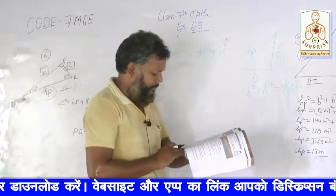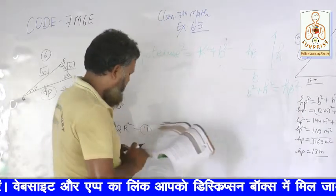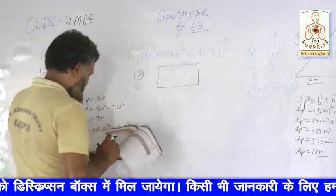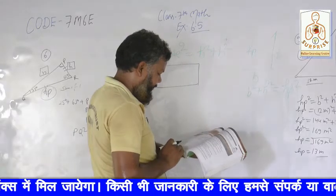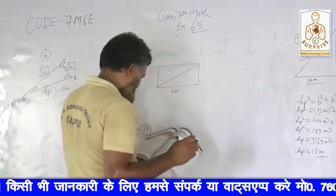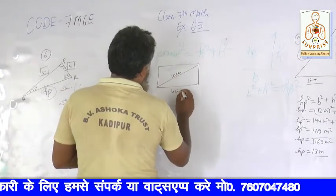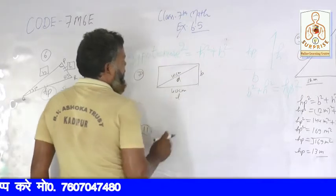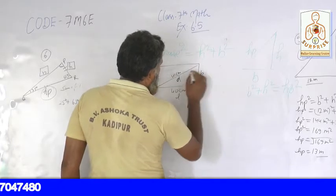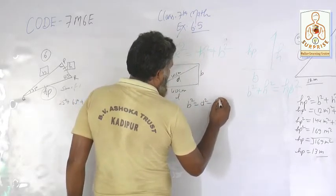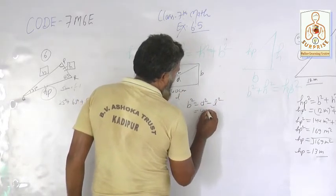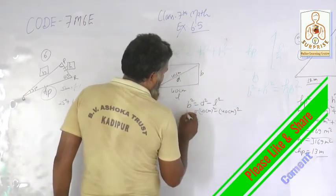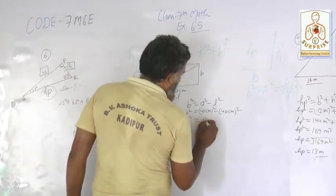Question number 7: It's a rectangle. One side is 40 cm and the diagonal is 41 cm. We need to make a rectangle. All sides are not equal. Diagonal square is equal to length square plus breadth square. 41² is equal to 40² plus b square. So b square is equal to 1681 minus 1600 = 81 cm square.